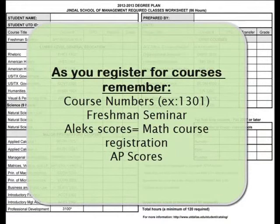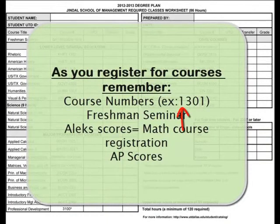Finally, as you register for courses, remember: course numbers indicate the level of the class. A one or two indicates an introductory level course. A three or four means a junior or senior level course.